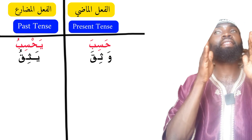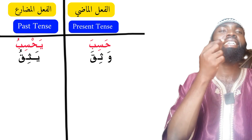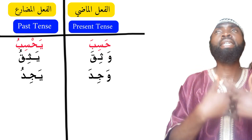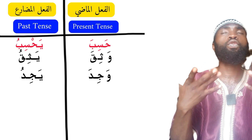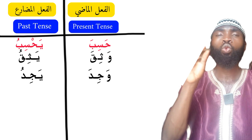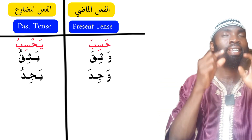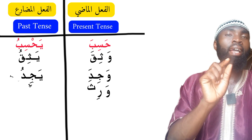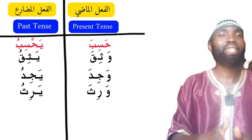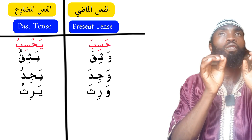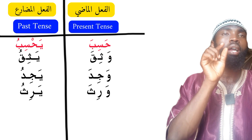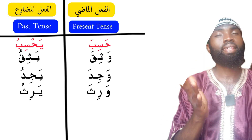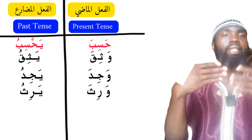The second example under the fifth pattern of hasiba-yahsibu is wajida-yajidu. Wajida means hazina — to become sorrowful over someone or something. So wajida-yajidu follows this conjugation pattern. Another example is also rendered as wajida-yajidu, meaning he inherited. So wajida-yajidu means he inherited, and yajidu means he is inheriting. Both examples follow this fifth pattern.